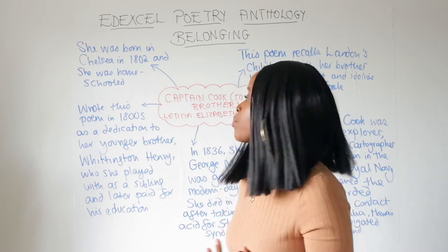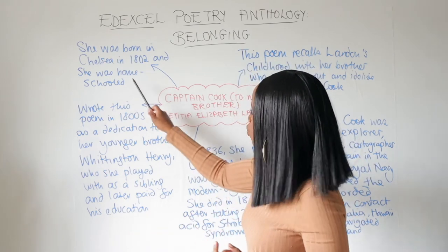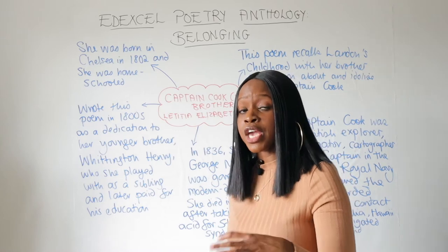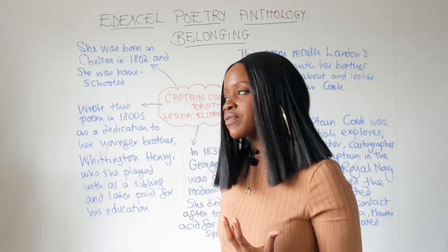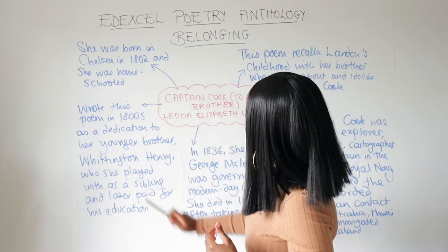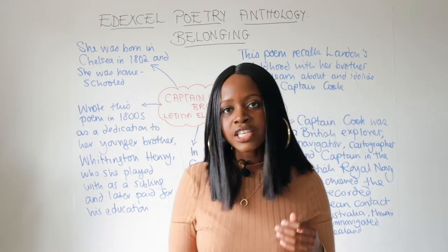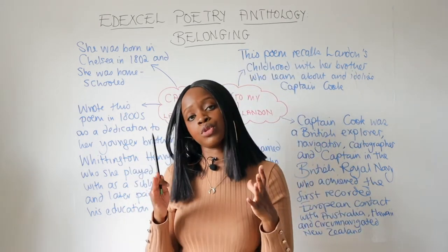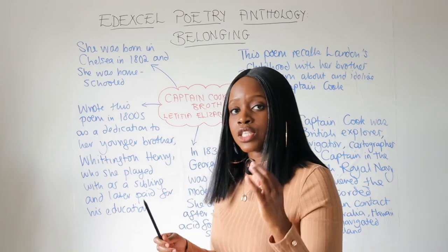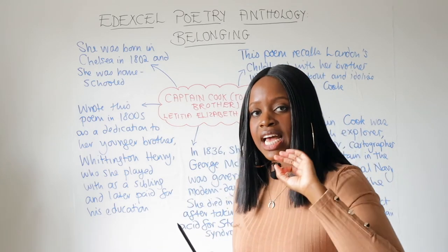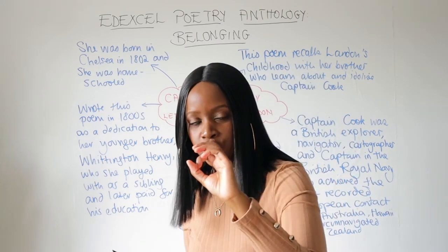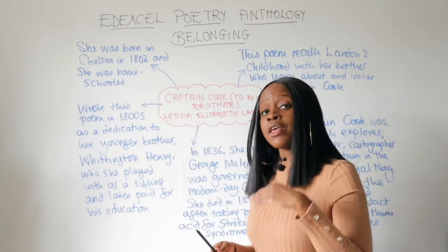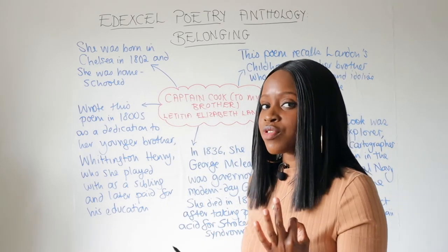The first thing to bear in mind contextually relating to Letitia Elizabeth Landon is that she is a Victorian poet. She was born in Chelsea — still a very fancy part of London — so she comes from a very bourgeois, upper-middle-class family. She was born in 1802 and was homeschooled by her parents, so she never attended formal school but was still highly educated.